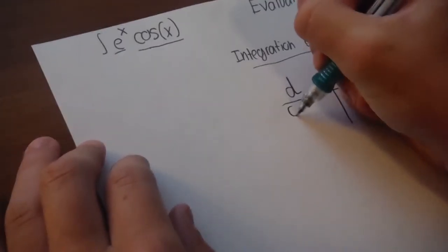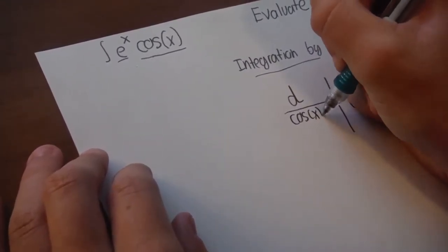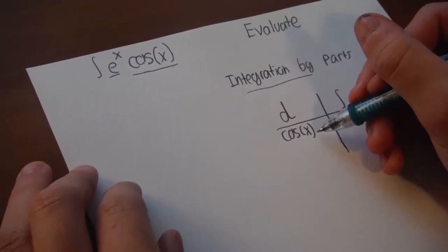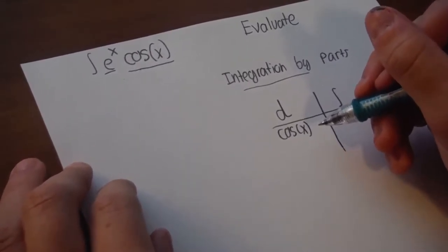and the cosine of x, because we want to derive the cosine of x as many times as we need to, to get back to this original equation, cosine of x.